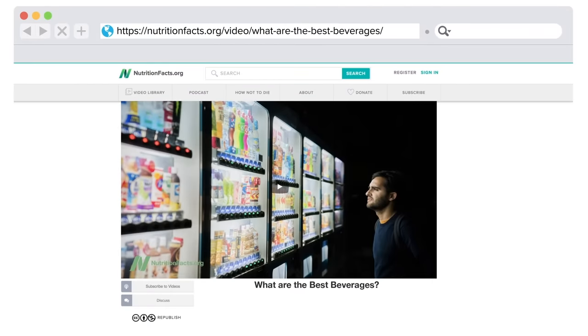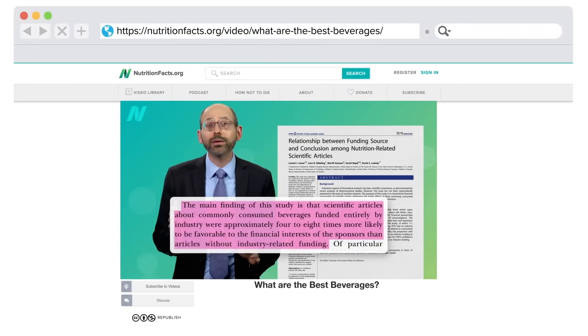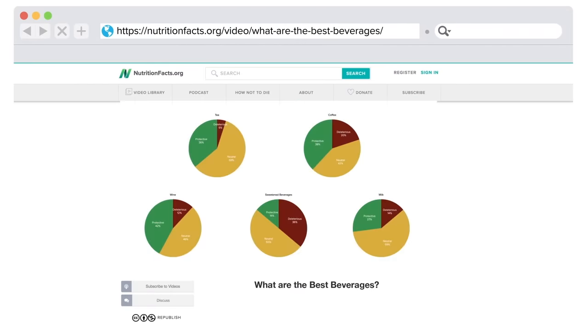I talked about the effects of the dairy industry funding in my last video, as well as substitution effects. Those who drink milk may be less likely to drink soda, a beverage even more universally condemned. So the protective effects may be relative, arising not necessarily from what they're consuming, but rather from what they're avoiding.